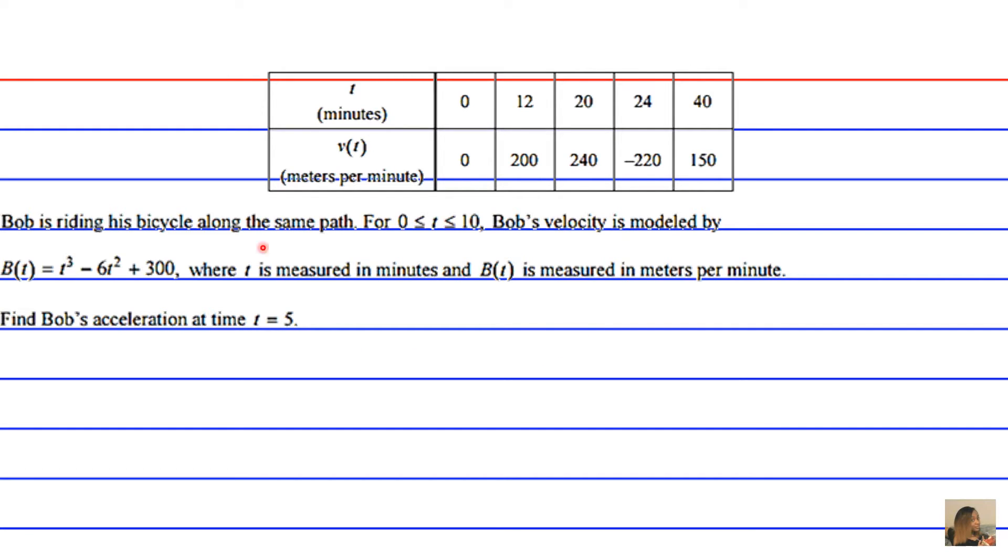In case you forgot how to do a derivative in your calculator or just in general, this is a pretty straightforward derivative. So we're going to do the derivative with respect to t. This is just an aside for those of you who forgot. I rearranged the equation just because this is the way I like it in order of ascending powers. So 300 minus 6t squared plus t to the third power.